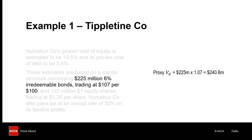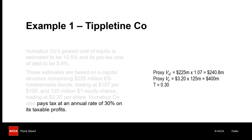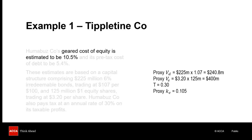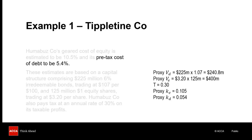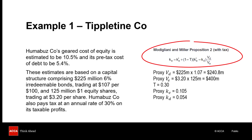Firstly, you can see the candidates were provided with sufficient information to calculate the proxy company's market value of debt and its market value of equity. There's a tax rate and Hummerbuzz Co's geared cost of equity and its pre-tax cost of debt. These are all inputs that can be used in the Proposition 2 formula, which is reproduced in the top right-hand of the screen from the AFM formula sheet.